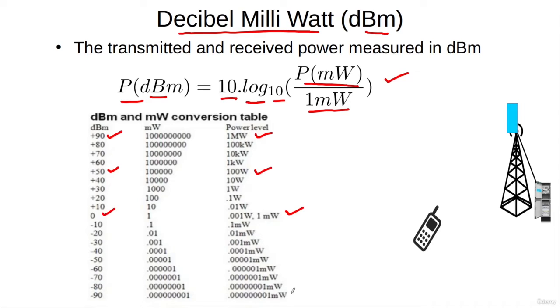If we convert this small quantity into dBm, we get minus 90 dBm. We can see that between these quantities in terms of watts, there is a huge difference in power. But in terms of dBm, this variation is only from 90 dBm to minus 90 dBm.